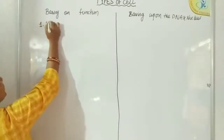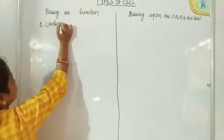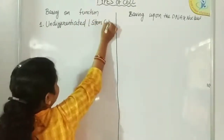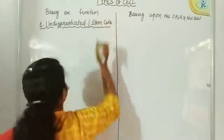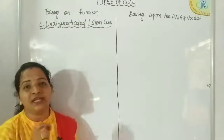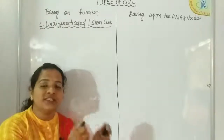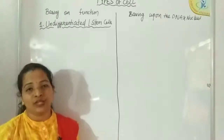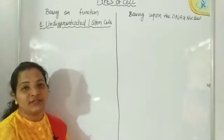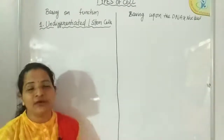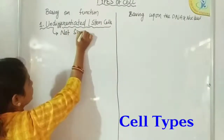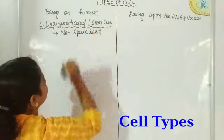Based on function, there are mainly three types of cells. First, the undifferentiated cells, or stem cells. These cells are undifferentiated, meaning they are unspecialized — not assigned a definite or special type of function. They are like reserve cells of the body. Whenever the need arises, these stem cells take on the function of differentiated cells and perform that specific type of function. They are not specialized but become specialized whenever there is need.